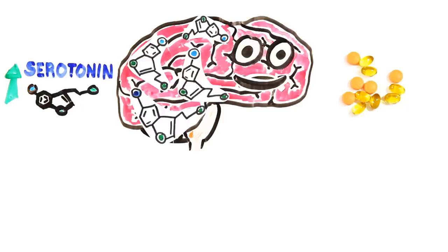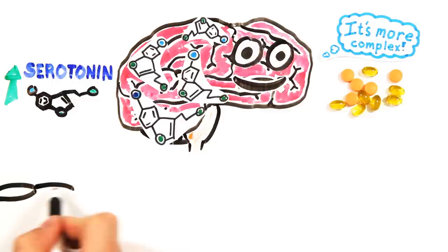But while chemicals most certainly are involved, this view doesn't really capture just how complex depression is. In recent years, scientists began to notice that brain cell growth and connections may actually play a larger role.